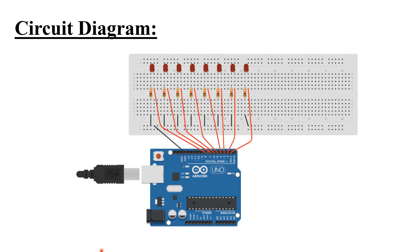This is the circuit diagram used for the project. This is the Arduino Uno board and we used eight LEDs and eight resistors. These resistors are used to limit the current. The negative ends of the LEDs are connected to the ground pin of the Arduino via resistors, and the positive pins of the LEDs are connected to digital pins one to eight of the Arduino board.